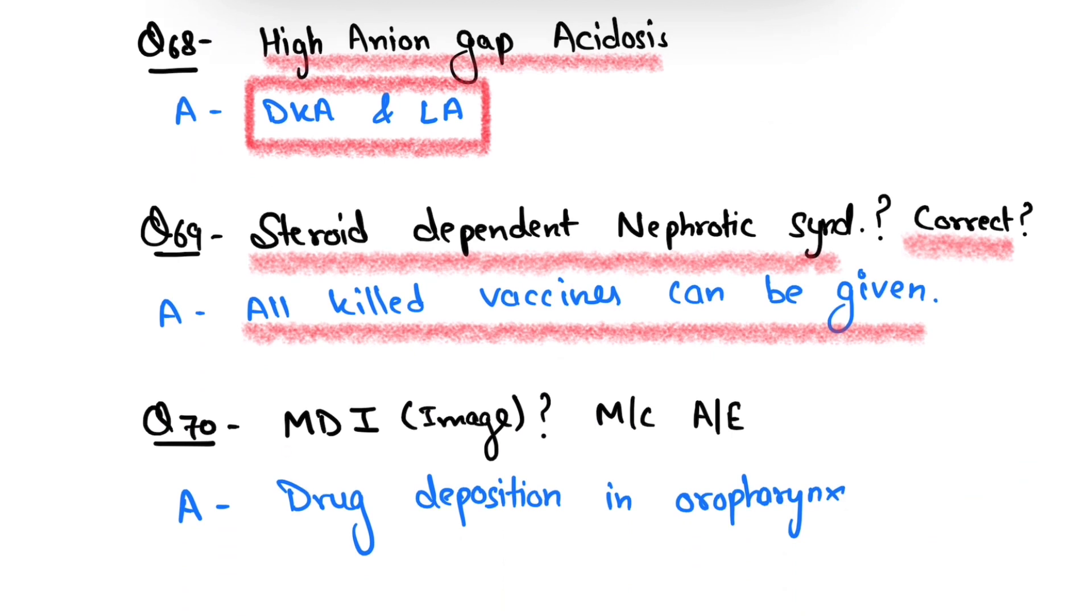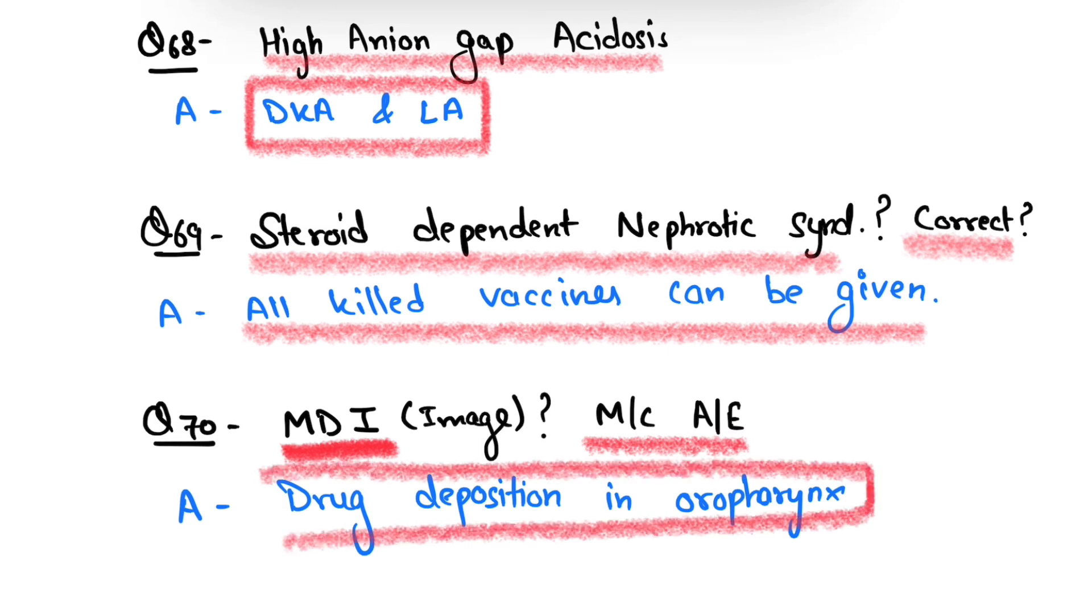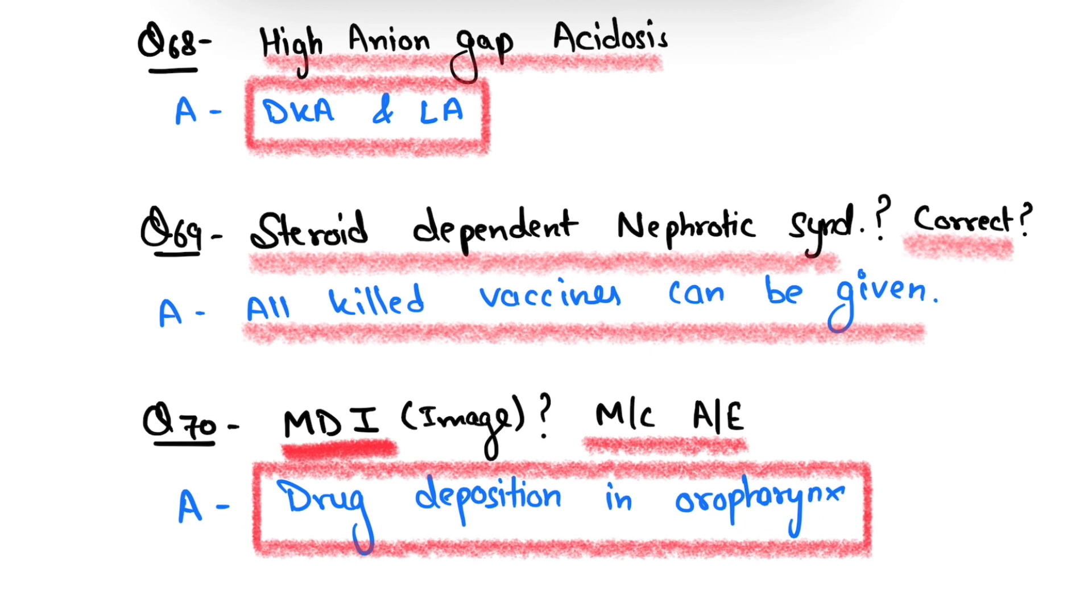An image of metered dose inhaler was given and they asked about the most common adverse effect in those patients. The most common adverse effect is drug deposition in the oropharynx. So this is about the 10 more questions.